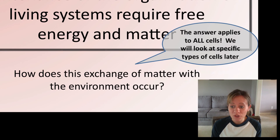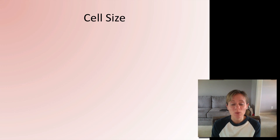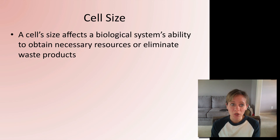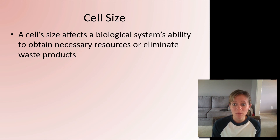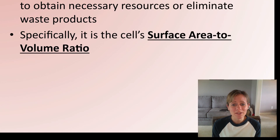This applies to all cells. We'll look at specific types of cells later, but just know that if it's a cell, it needs to exchange matter with the environment. Cell size is an important factor in how well this exchange works. Cell size is going to affect its ability to obtain nutrients — take in nutrients — and also its ability to eliminate waste products. We cannot have waste products building up in our cells.